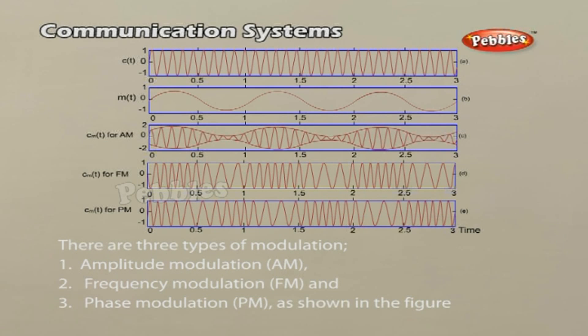A sinusoidal carrier wave can be represented as follows. The results in 3 types of modulation: 1. Amplitude modulation, 2. Frequency modulation, 3. Phase modulation, as shown in the figure.